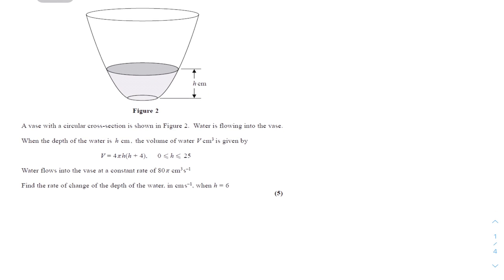We'll move on with question 1. A vase with a circular cross-section is shown in figure 2. The water is flowing into the vase, and when the depth of the water is h cm, the volume of the water represented as V cm cubed is given by the equation in the question. The water flows into the vase at a constant rate of 80π cm cubed per second. Find the rate of change of the depth of the water in cm per second when the depth is 6 cm.